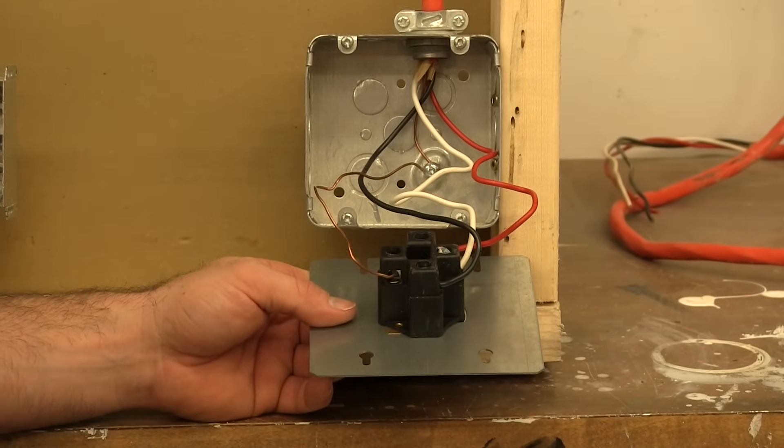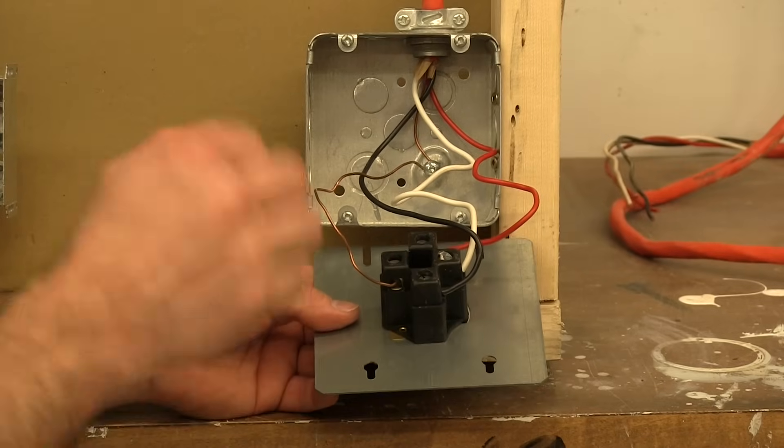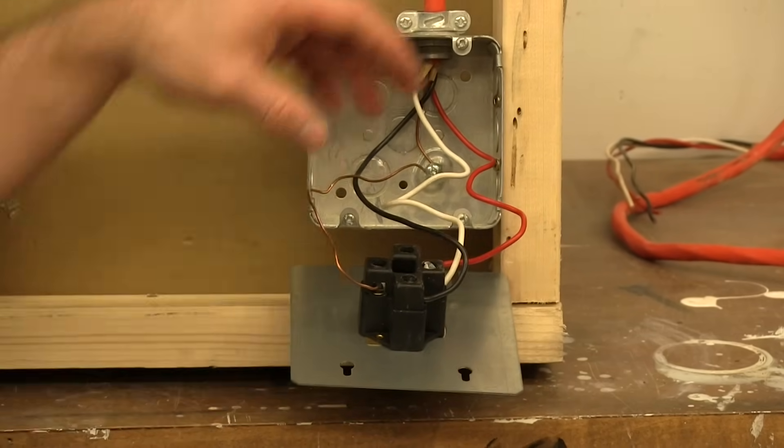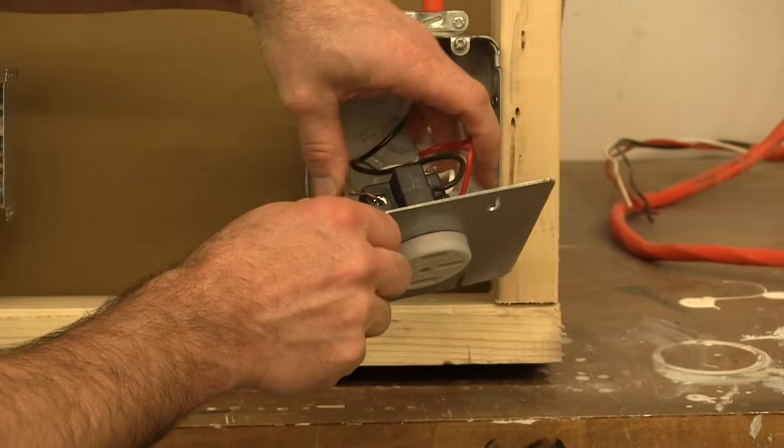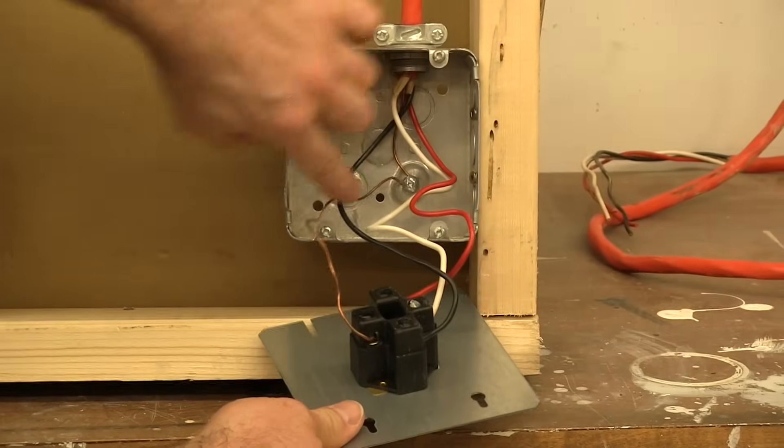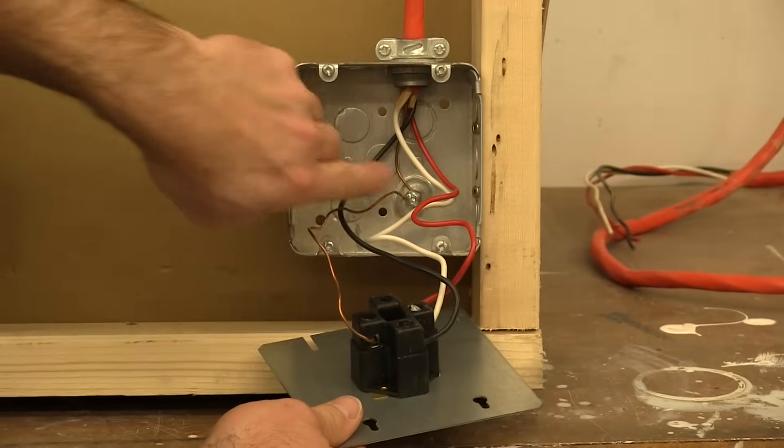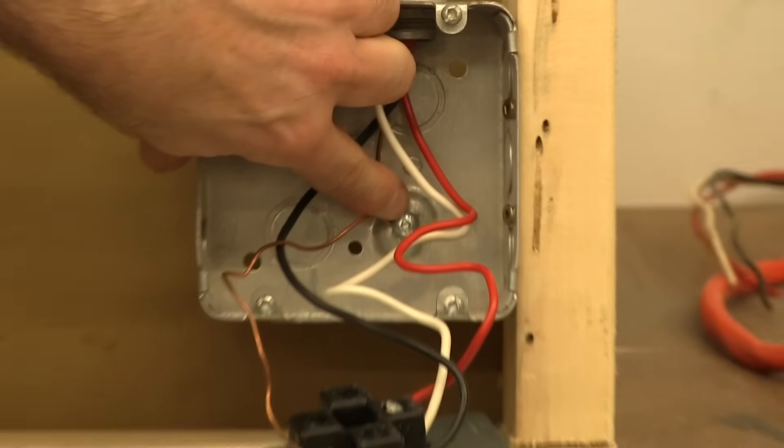So put them in, make sure your screws or your attachment point is good and tight and then you're ready to remount the whole thing back in your box. So one other thing to remember is to make sure your ground wire, this bare wire, is also grounded to the box.